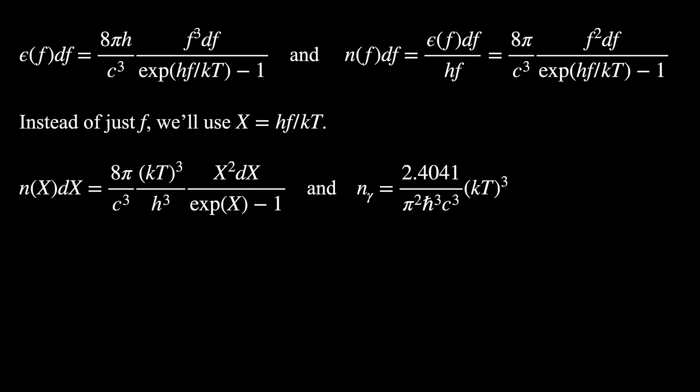So now we're going to do a substitution of variables. We're not going to use the frequency in our differential equation anymore. We're going to use a new variable called x. And x will be defined to be h, Planck's constant, times the frequency divided by kT. So we're basically using what's in the exponential and turning that into our variable.